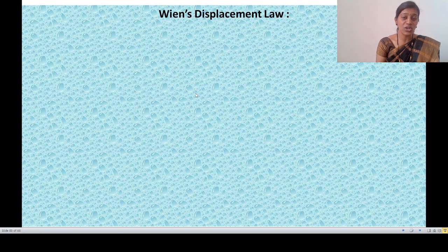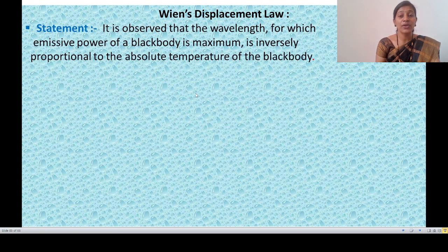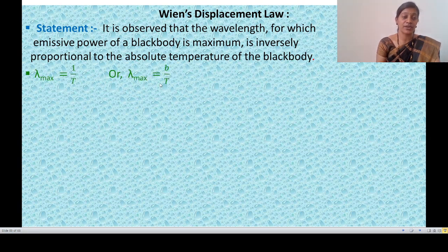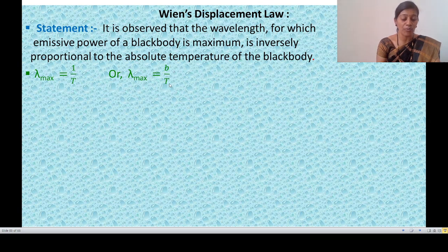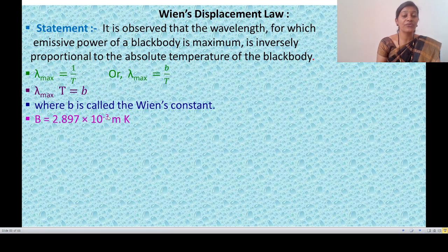Next is Wien's Displacement Law. The statement is: it is observed that the wavelength at which emissive power of a black body is maximum is inversely proportional to the absolute temperature of the black body. Lambda-max equals B upon T, or lambda-max times T equals B, where B is Wien's constant equal to 2.897 × 10⁻³ meter·Kelvin.